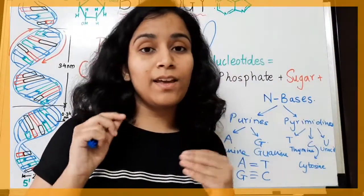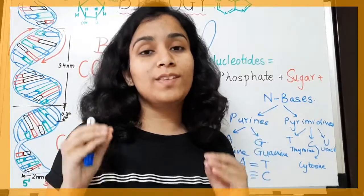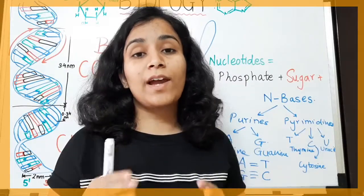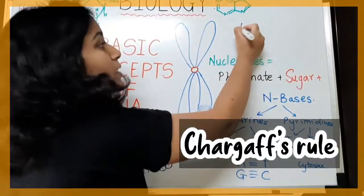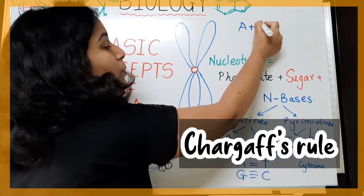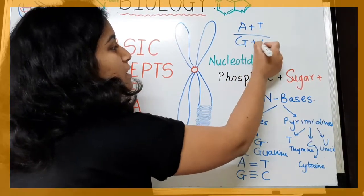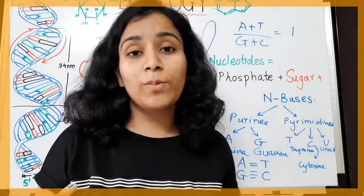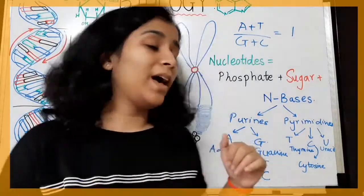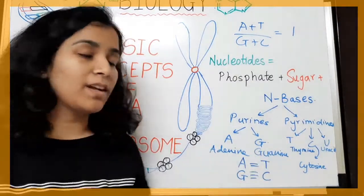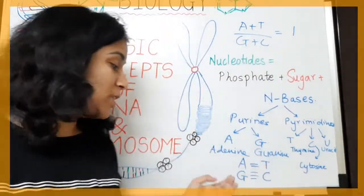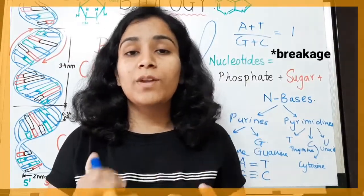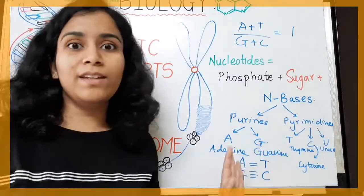This base pairing follows Chargaff's rule — purines and pyrimidines are always equal. This rule is only applicable for double-stranded DNA, and the formula is: (A + G) / (T + C) = 1. Since A-T pairs have only two hydrogen bonds and G-C pairs have three, A-T pairs are more easily breakable than G-C pairs.